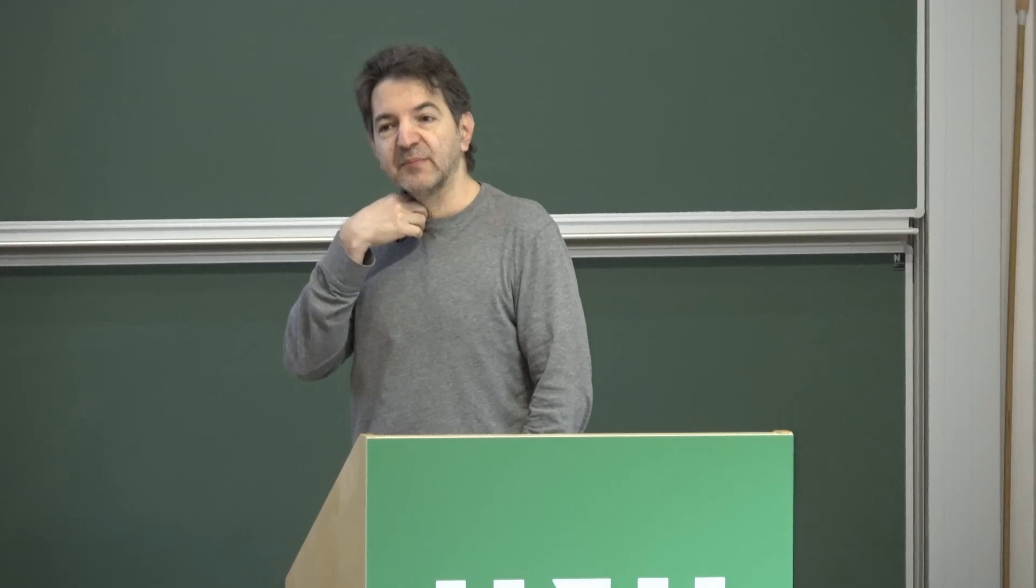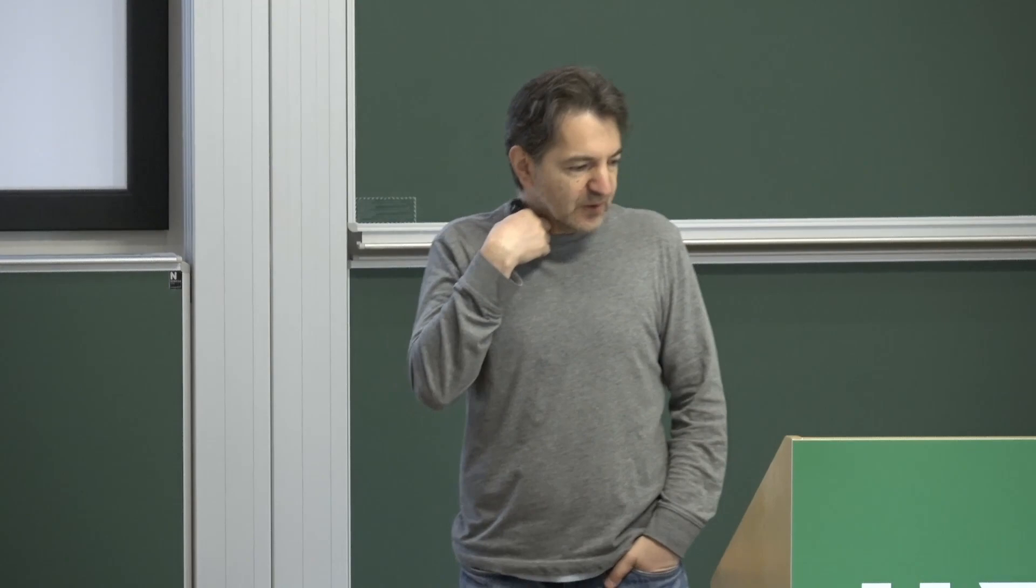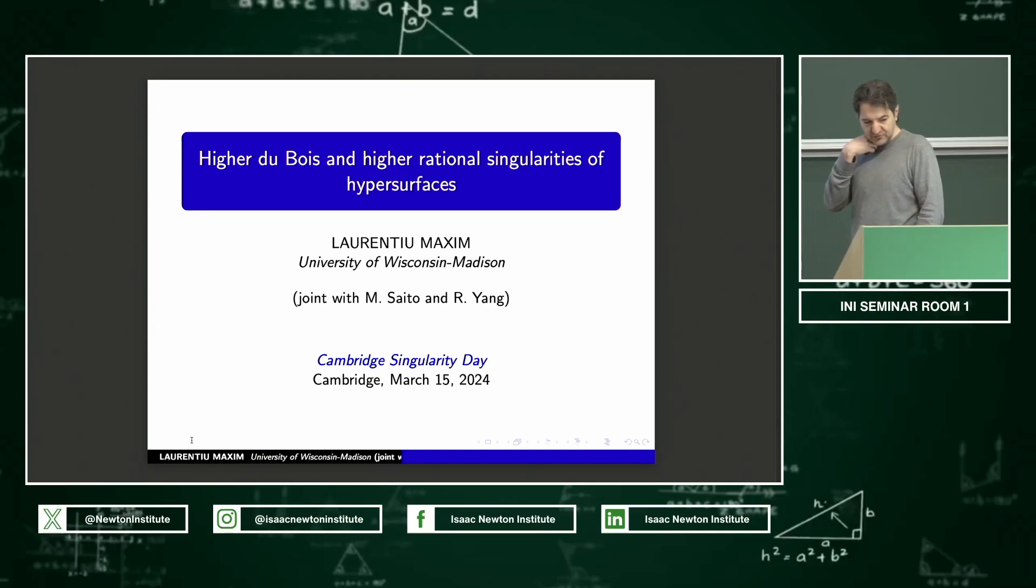Most people know about rational singularities and Du Bois singularities. I'm talking about algebraic geometers here, but they appear a lot in the minimal model program. And more recently, using Hodge theory or Hodge theoretic methods, Mustață, Popa, Saito, and their many collaborators introduced higher versions of this kind of singularity. What I want to do today is briefly remind you what these things are and then show you how they are related to characteristic classes.